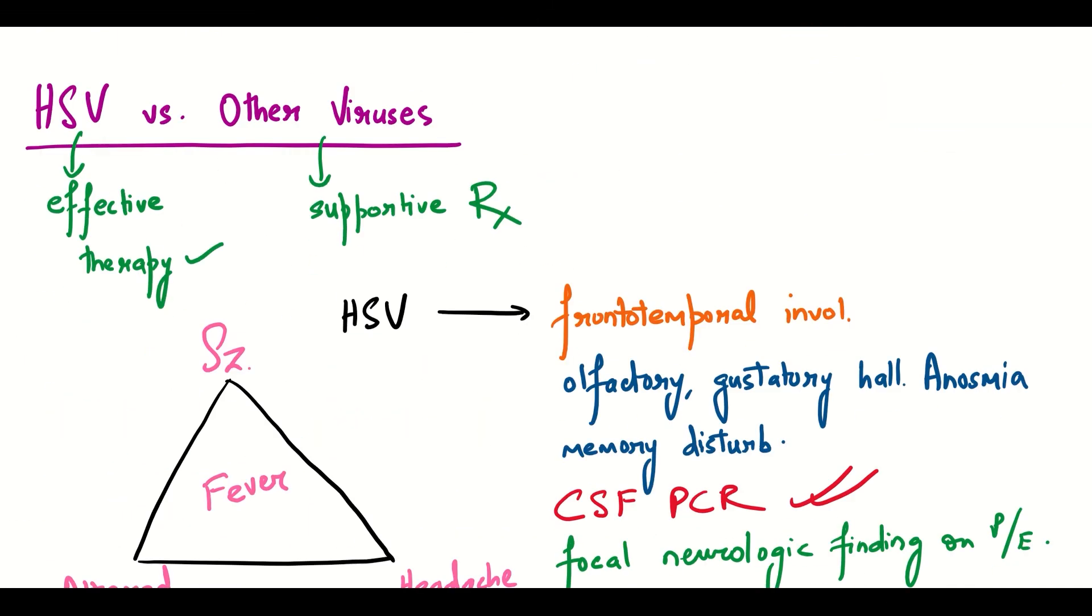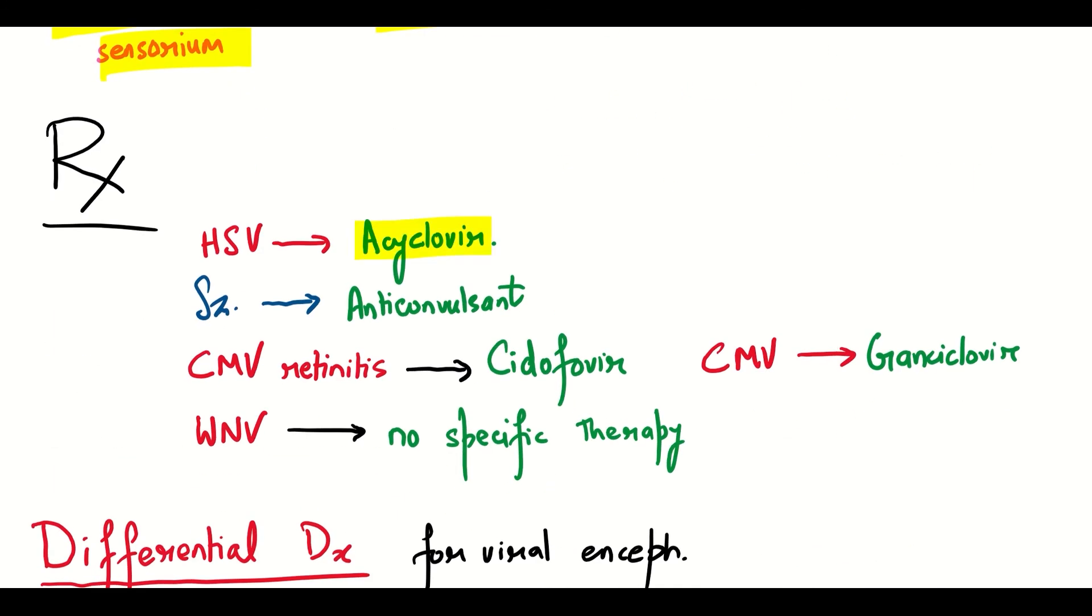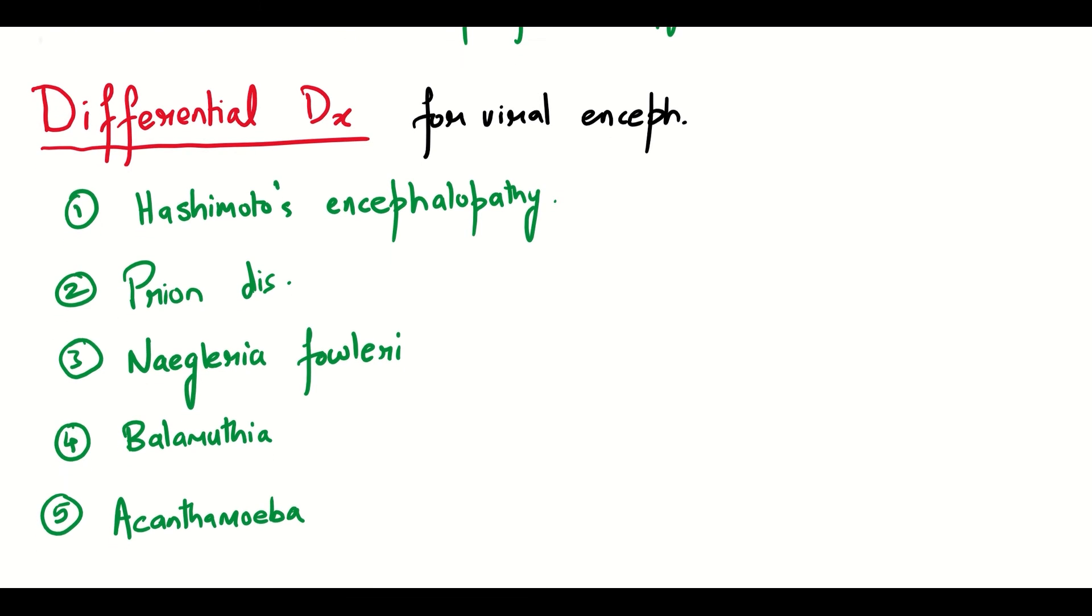A temporal discharge will be seen in HSV. HSV has effective therapy available and memory disturbances is seen because of temporal lobe involvement. Then seizures, altered sensorium, and headache form the triad. HSV is treated by acyclovir while CMV is treated with ganciclovir.